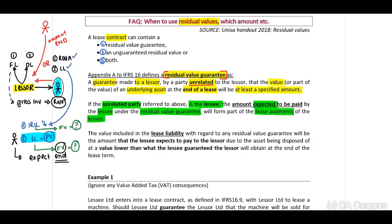Therefore, if this is an amount either by a third party or by your lessee - if there is any amount expected to be paid at the end to your lessor, you need to include this as your future value. The value included in the lease liability with regards to any residual value guarantee will be the amount that the lessee expects to pay to the lessor due to the asset being disposed of at a value lower than what the lessee guaranteed the lessor will obtain.